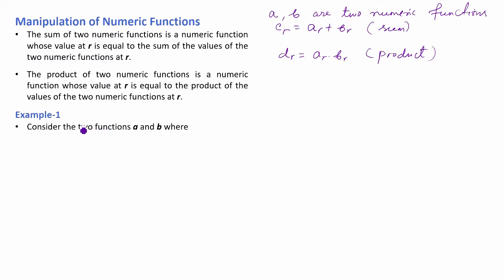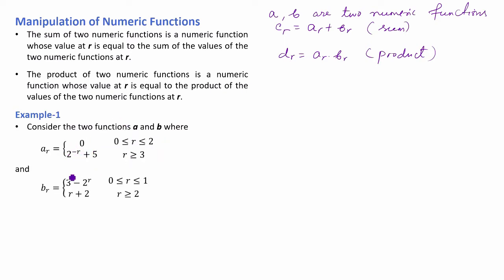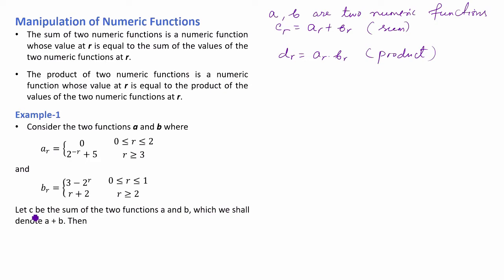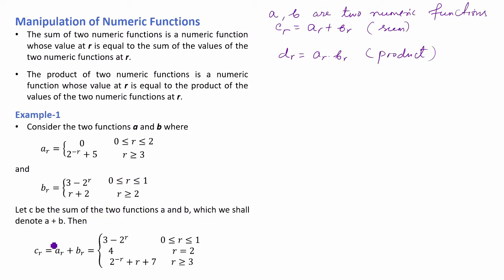Consider two numeric functions a and b where a and b are shown as follows. Let c be the sum of the two functions a and b, which we shall denote a plus b. Then c(r) is equal to a(r) plus b(r), and this is the numeric function c which is the sum of the numeric functions a and b.